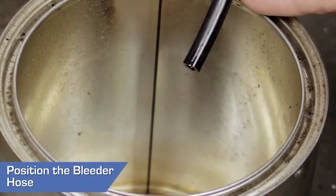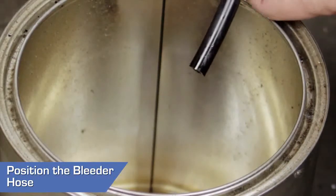Using a suitable container to catch fuel, position the free end of the bleeder hose in the container.